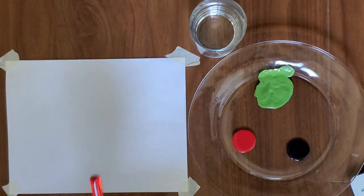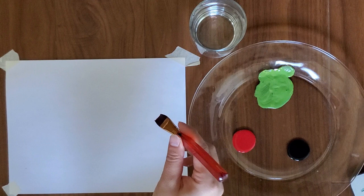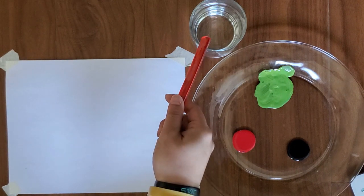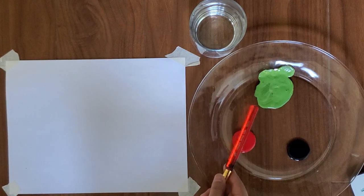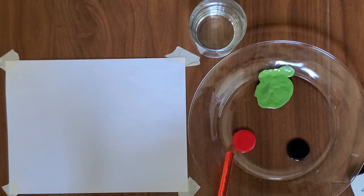For this we're going to need a piece of paper, a paintbrush, a cup with clean water, a plate or something to put the paint on, green, black, and red paint.